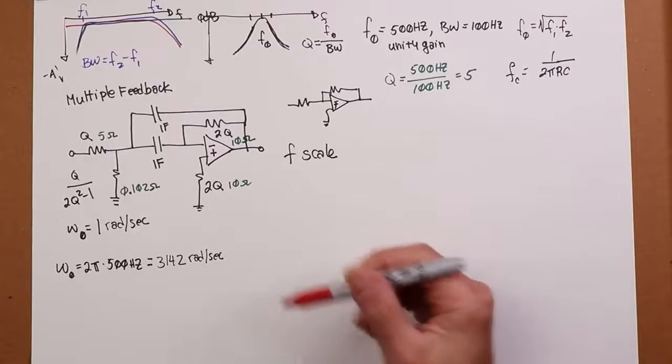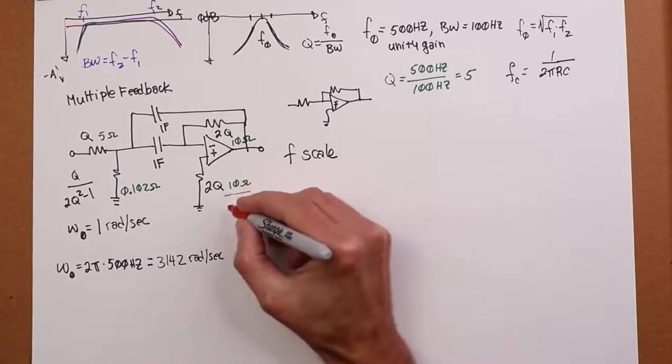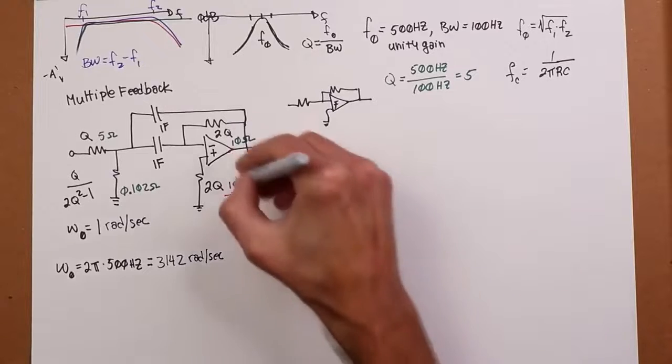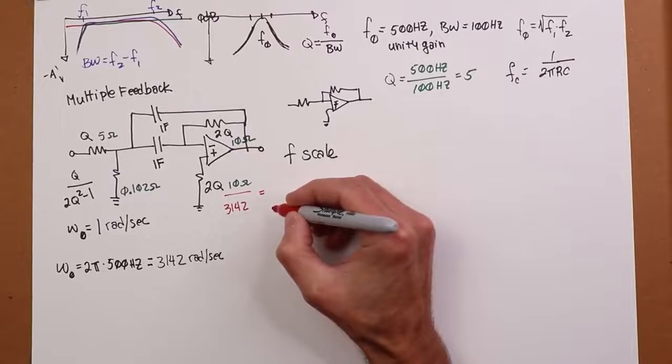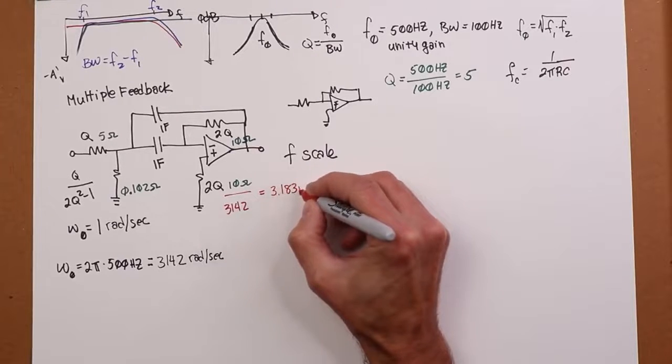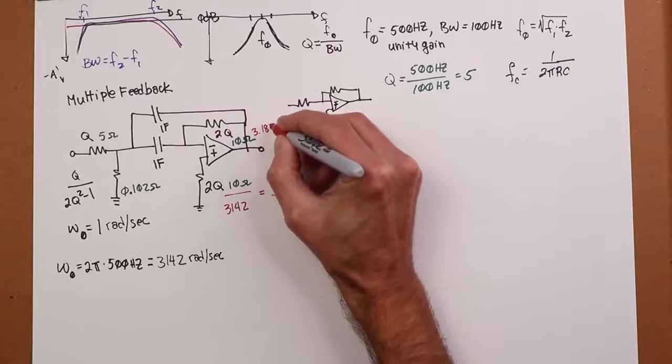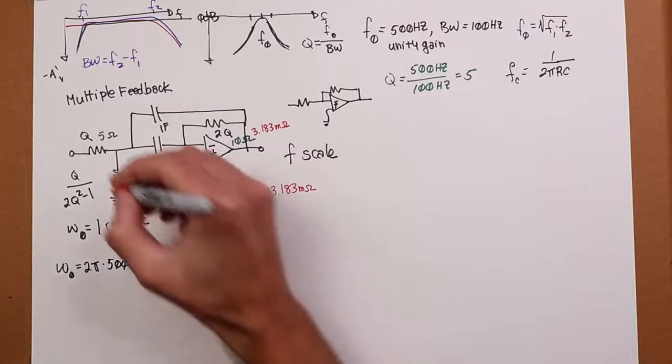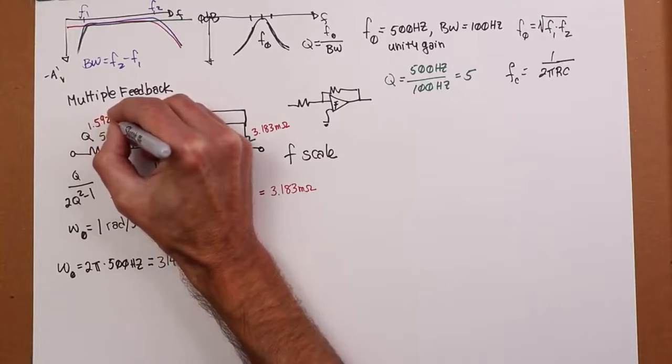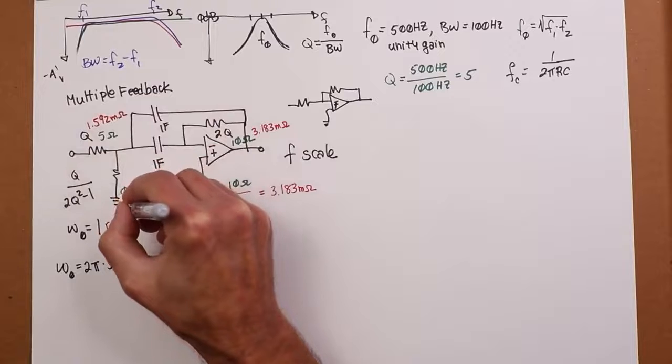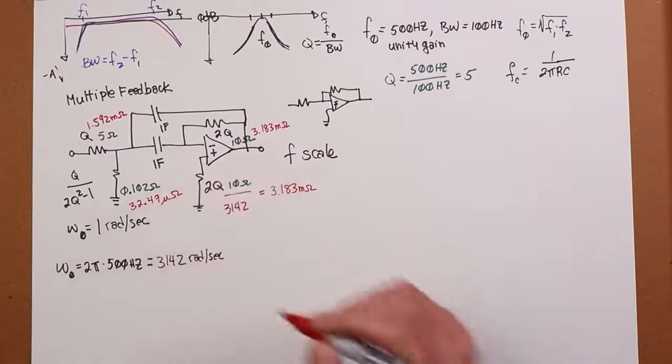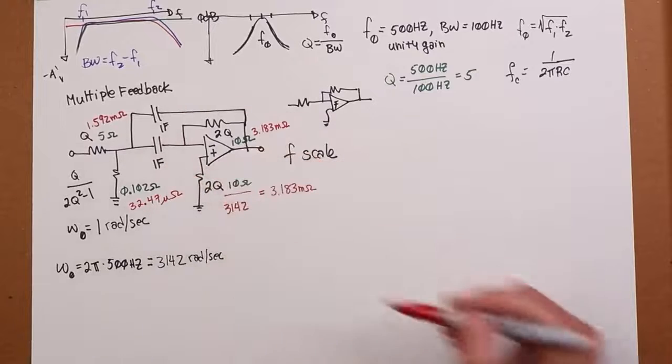So, when I do that, divide 10 ohms by 3142, and what do we wind up with? Well, that's going to turn into, for both of these guys, that's going to turn into 3.183 milliohms. This guy over here, the 5 ohm, that's half the value, so that's going to be roughly 1.592 milliohms. And then this little guy over here turns into 32.47 microohms. Again, keeping the 1 farad capacitors.